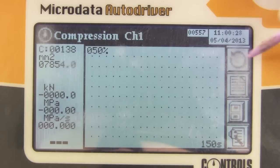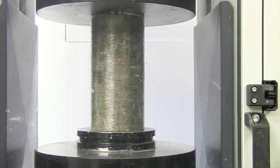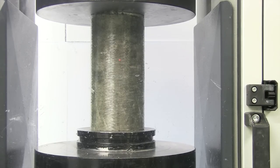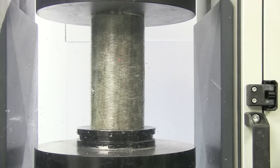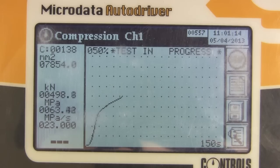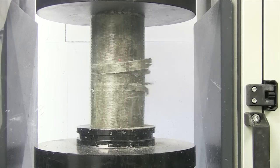Then we took the column wrapped in SikaWrap. On goes the compression force, and we wait. At this point, the unwrapped column had failed. When close to double the compressive forces exerted on it, finally, the SikaWrap column fails.